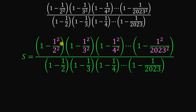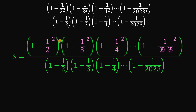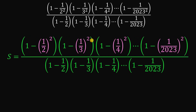We can rewrite each term as 1 over 2 raised to the power of 2, 1 third raised to the power of 2, 1 over 4 raised to the power of 2, all the way down to 1 over 2023 raised to the power of 2. The 1 on the left side can also be written as 1 squared, so this is a difference of two squares.